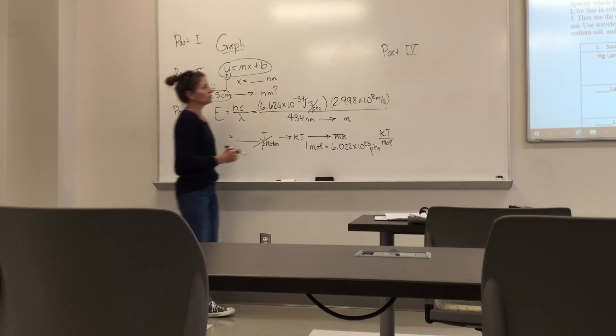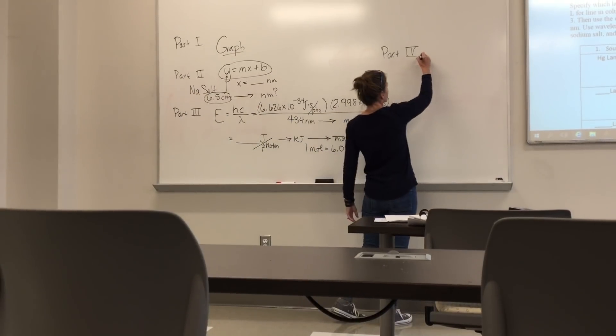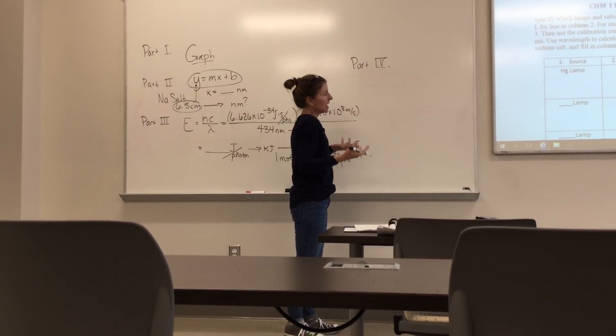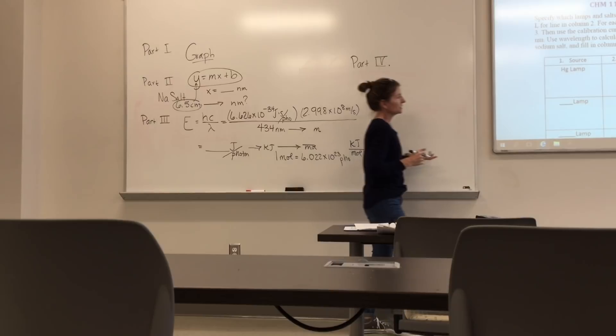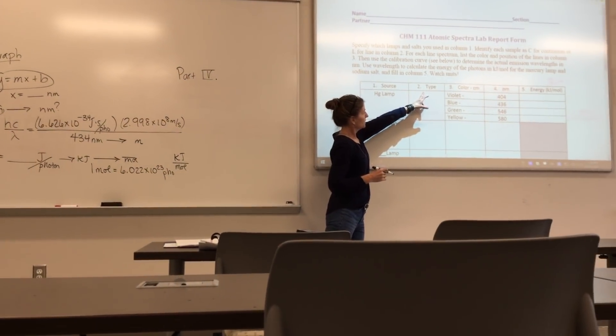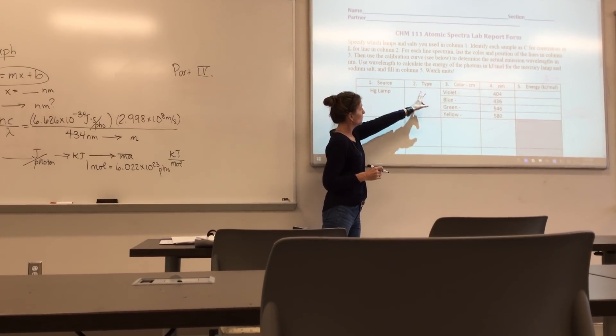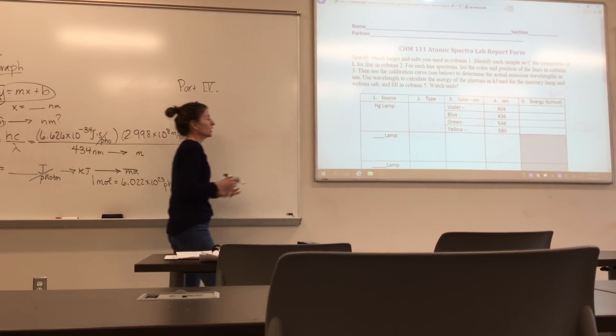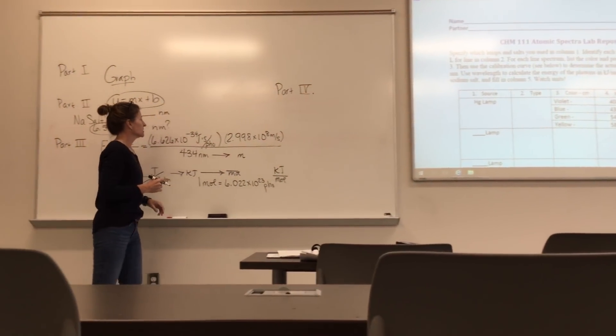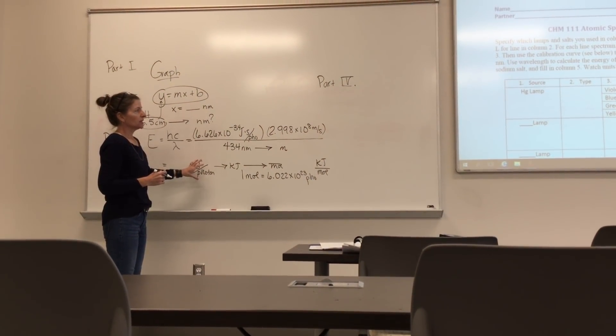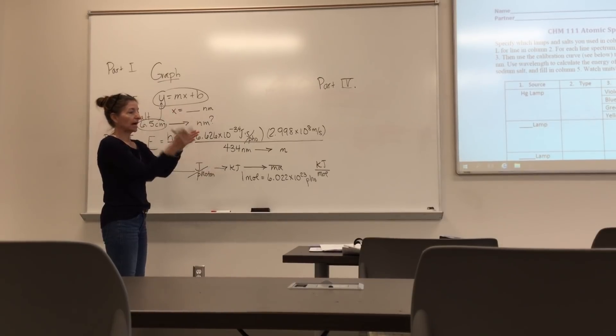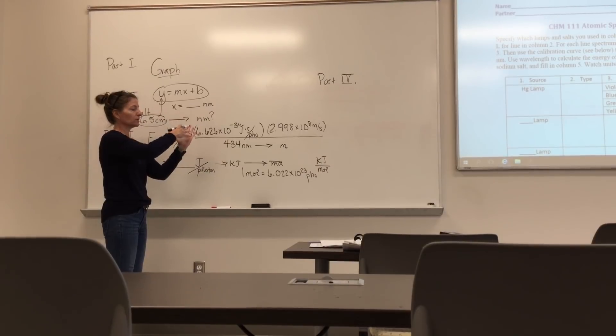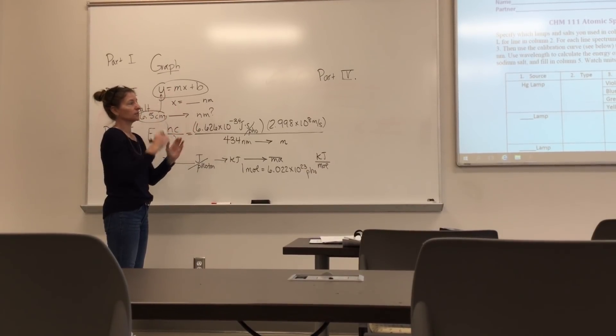Then, the very last thing that you'll do in part 4 is it asks you to tell what kind of line it is. Is it a line or a continuum source? You'll see type. That means here you want to know if it's a continuum or a line source. And essentially, it's just what you saw. So you'll notice that all of these elements that you measured, they had specific lines. Hence, line source. Or if you saw a continuum source, you saw a blur of lines, as if you looked at white light.